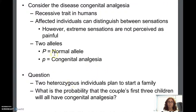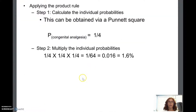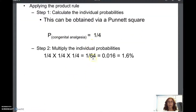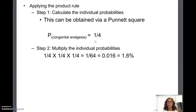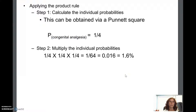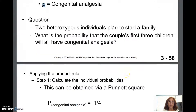In this monohybrid cross, if you have two heterozygous individuals — big P little p — and they plan on starting a family, what are the odds that one child will be little p little p? You do your Punnett square and see that congenital analgesia occurs a quarter of the time. Multiplying the probabilities together, 1.6% of the time in one birth you would end up with congenital analgesia.